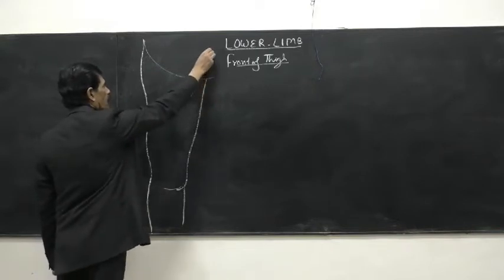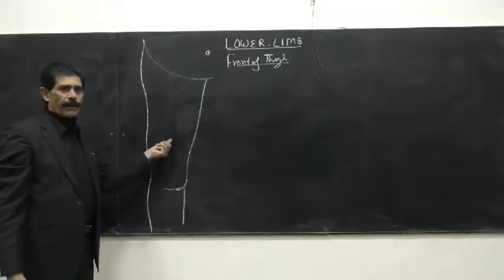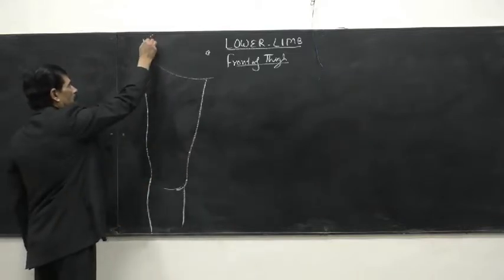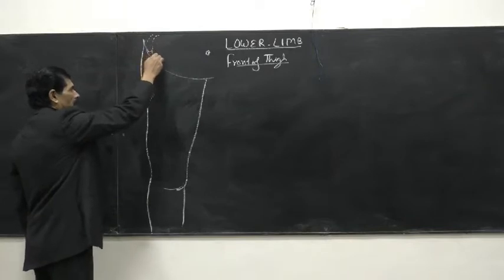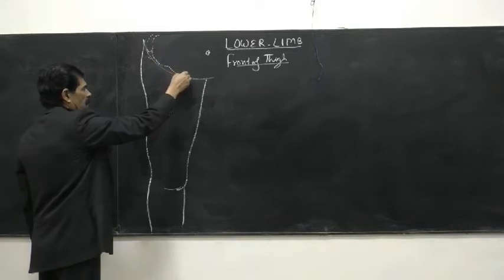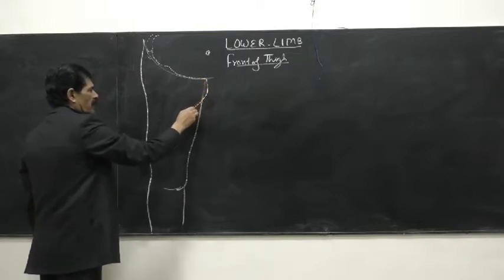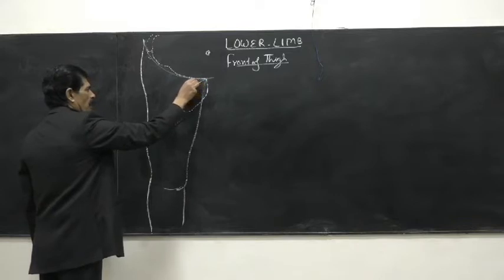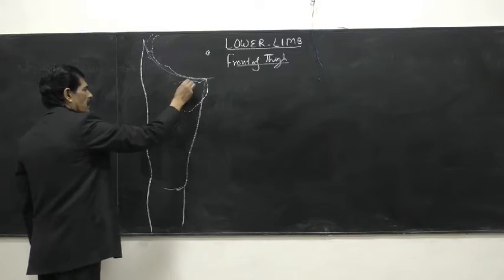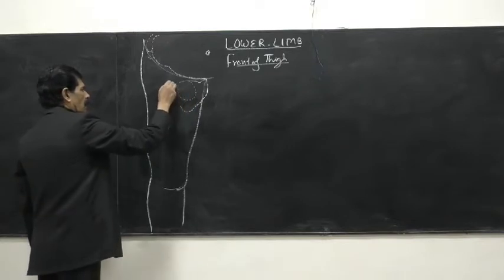We know the bones of the abdomen — this is the inguinal line or inguinal crease, the end of the abdomen and start of the lower limb. Here we have the lower part, the pelvis: the iliac crest, the anterior superior iliac spine, anterior inferior iliac spine, the iliopubic eminence, superior ramus of the pubis bone, the pubic symphysis, the ischiopubic ramus, the ischial tuberosity, the iliopubic crest, the pubic tubercle, the obturator crest, the obturator foramen, and the acetabulum — the cup of the hip joint.